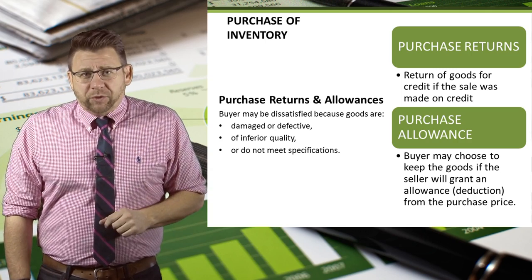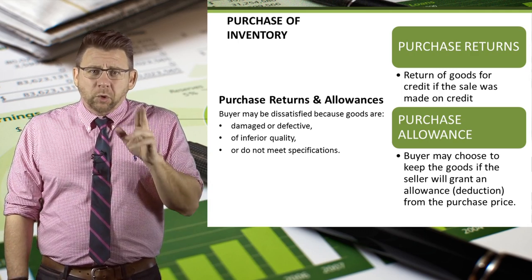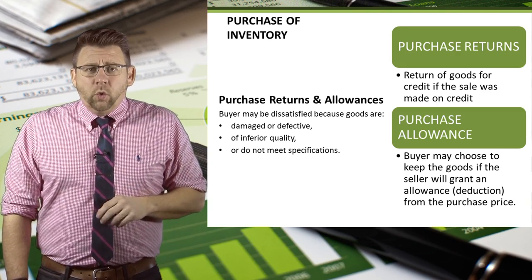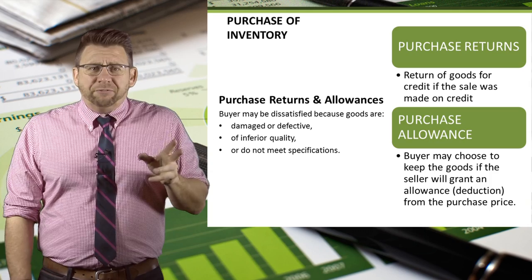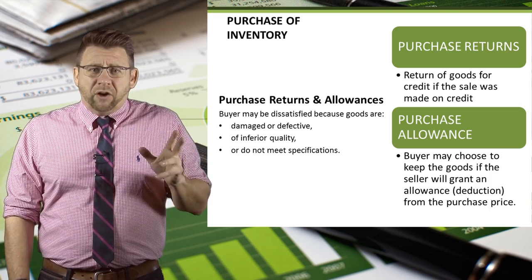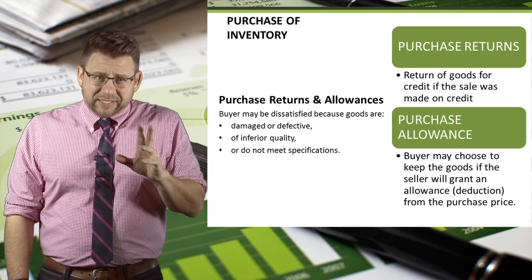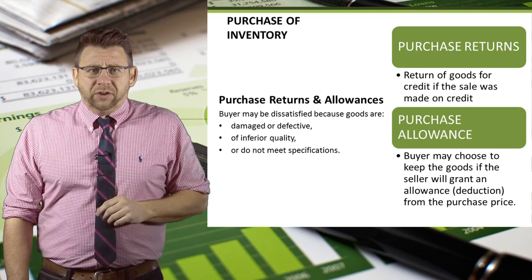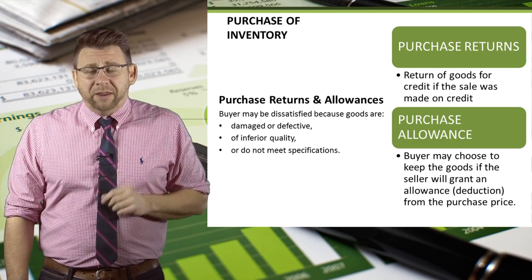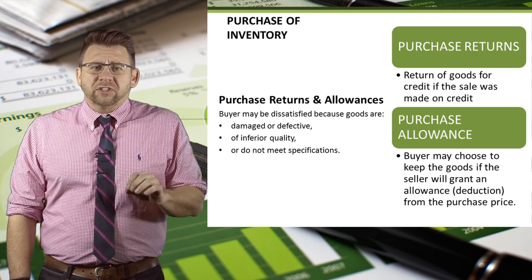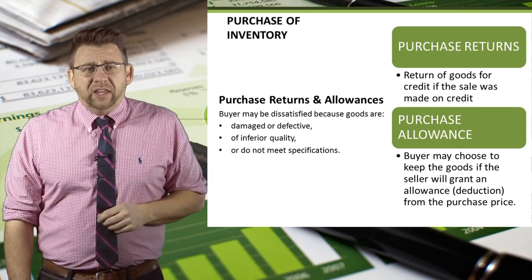A buyer may be dissatisfied with a purchase because the goods are damaged, defective, of inferior quality, or just the wrong ones were sent. Most of you are probably familiar with the concept of a purchase return, where the buyer sends the goods back for a refund. In a business-to-business sale, often only some of the merchandise is returned and the amount owed is just reduced. A purchase allowance is when the goods are not physically returned — the seller offers a deduction in the cost of the inventory rather than a reduction in the amount of physical inventory.